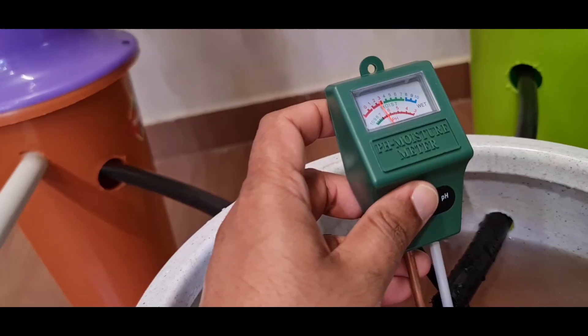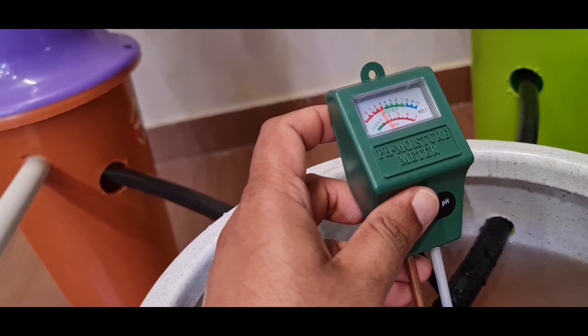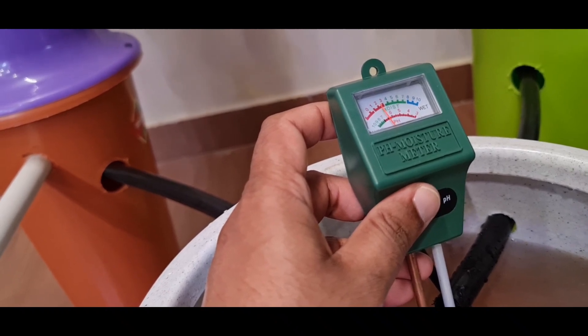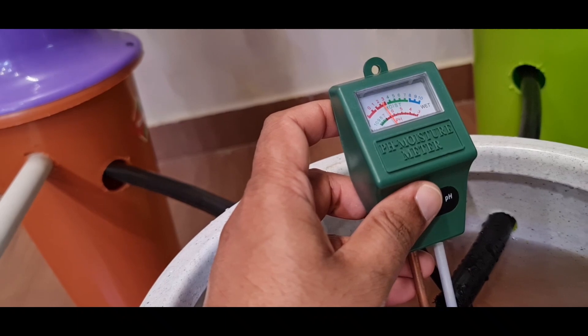Now, you can see the pH has come down a little after adding pH down solution. That is how you make it acidic. Ideal range is between 5 to 6.